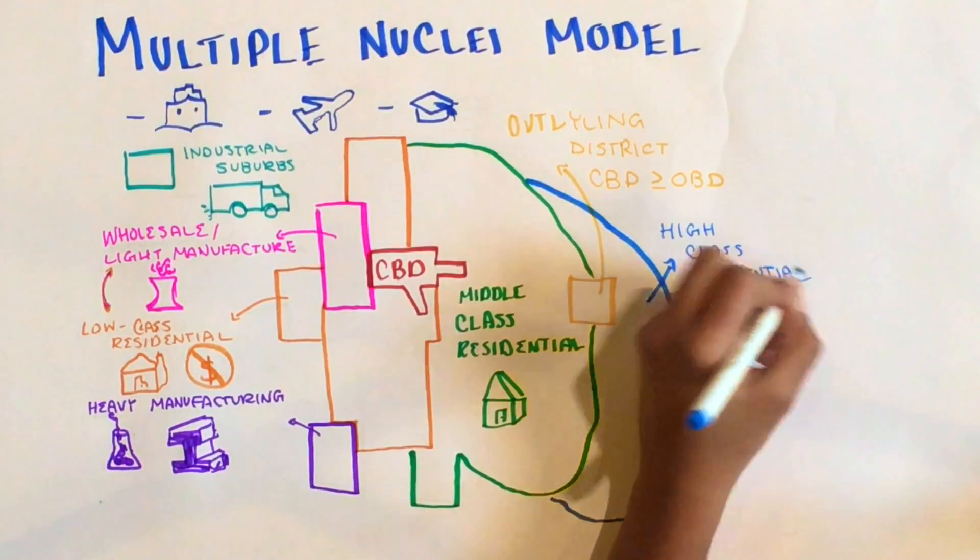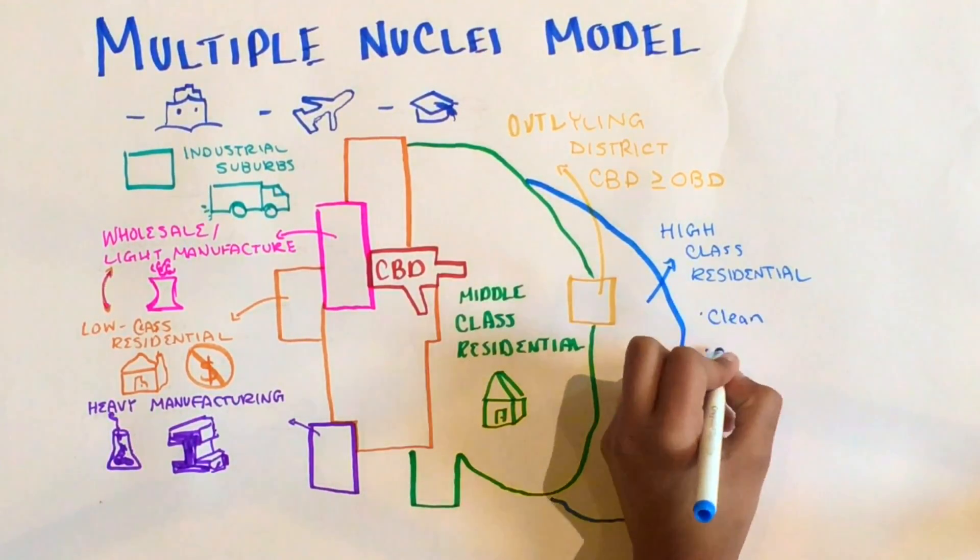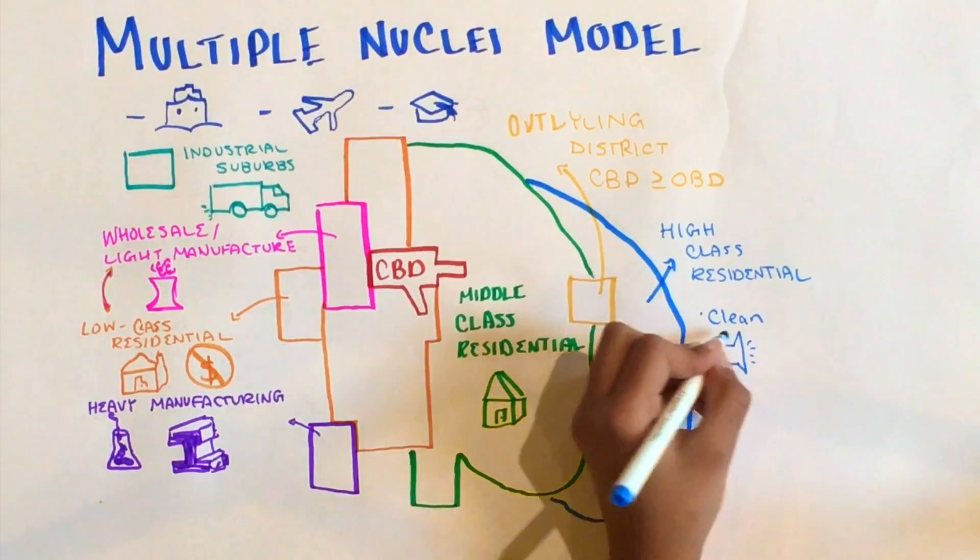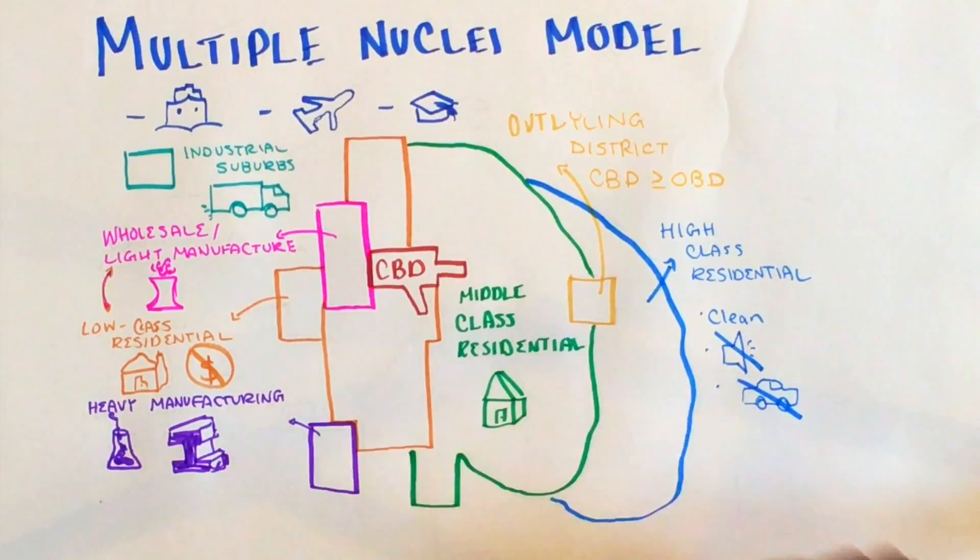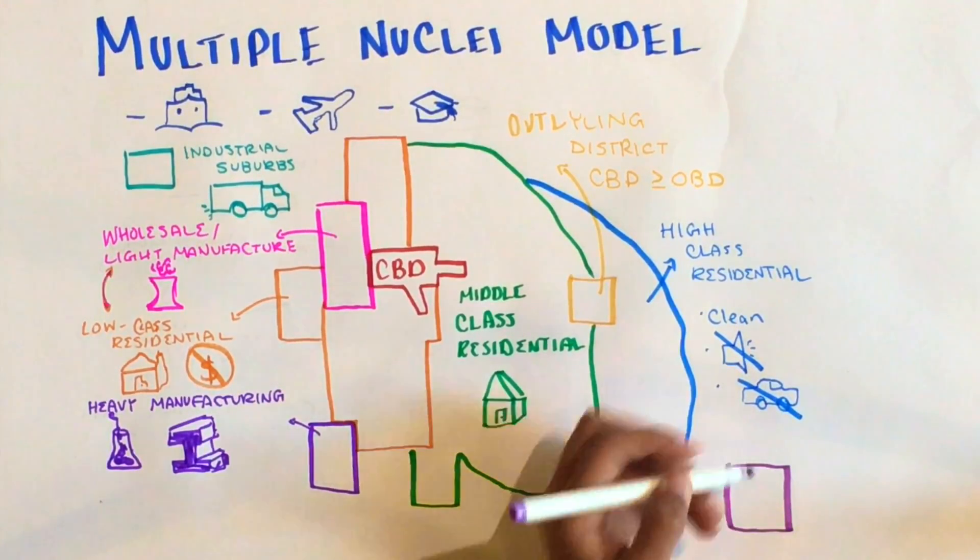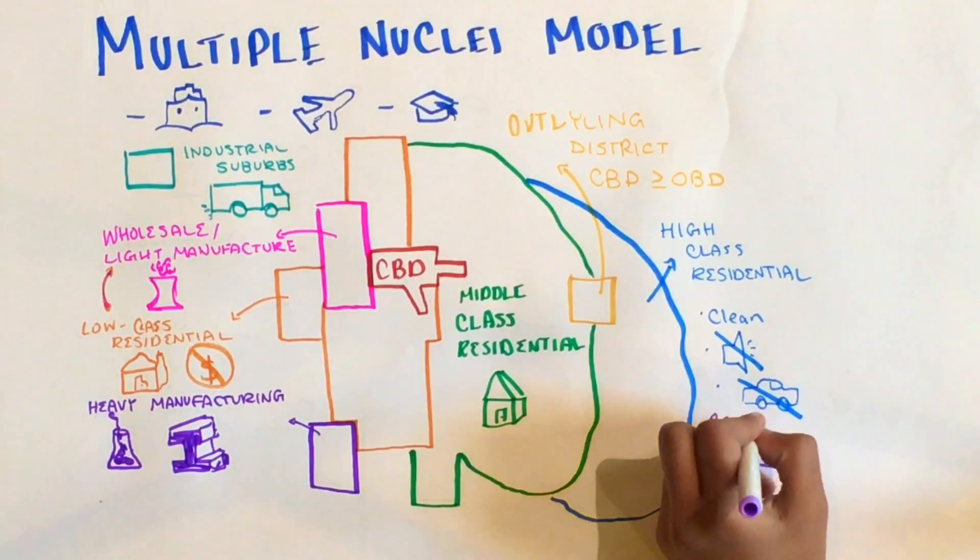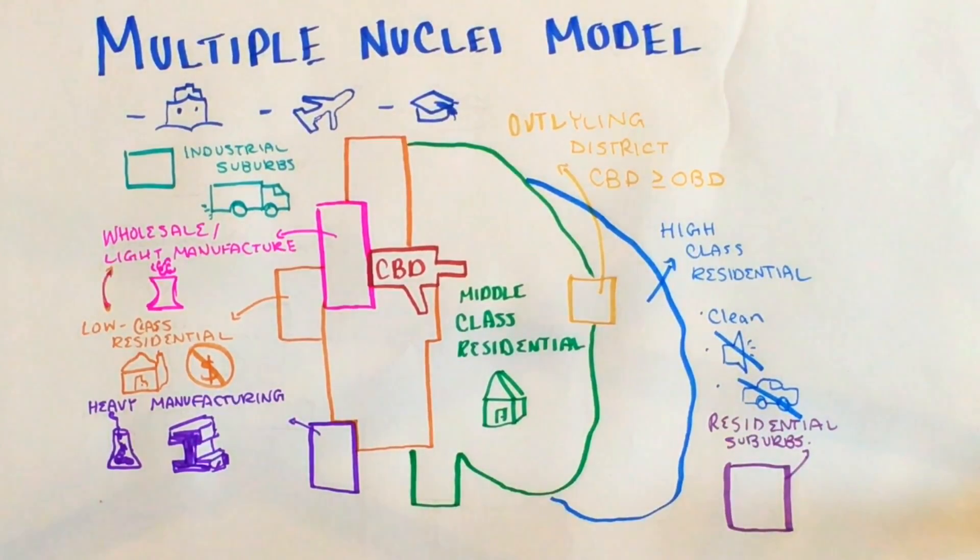After this would be the high-class residential. This is the zone where most of the elites gather, and this high-class residential area would be located along the edge of the city and is usually quiet and clean. Last is the residential suburbs.